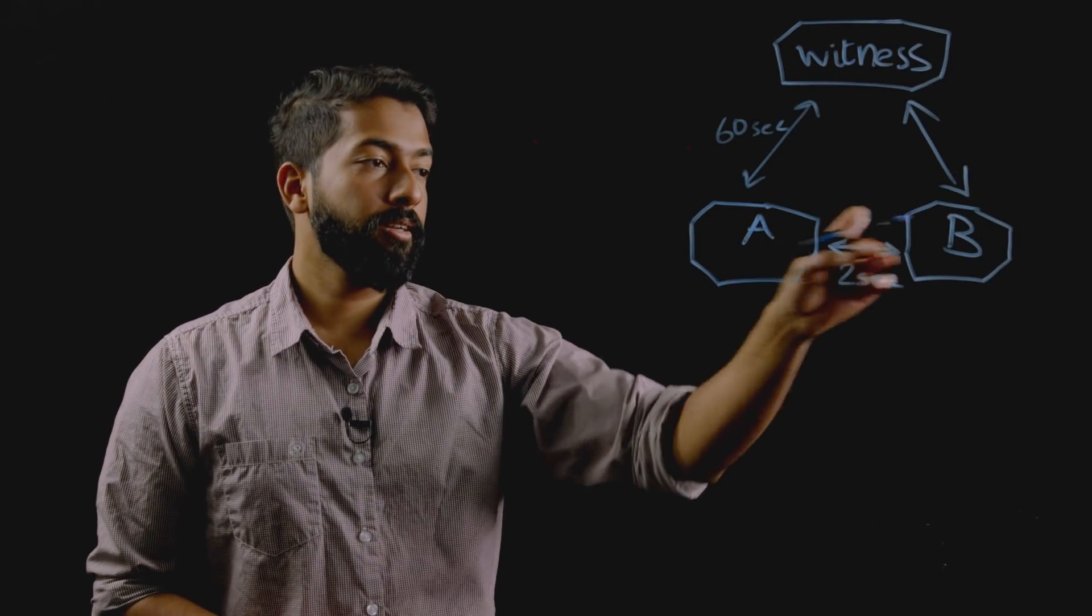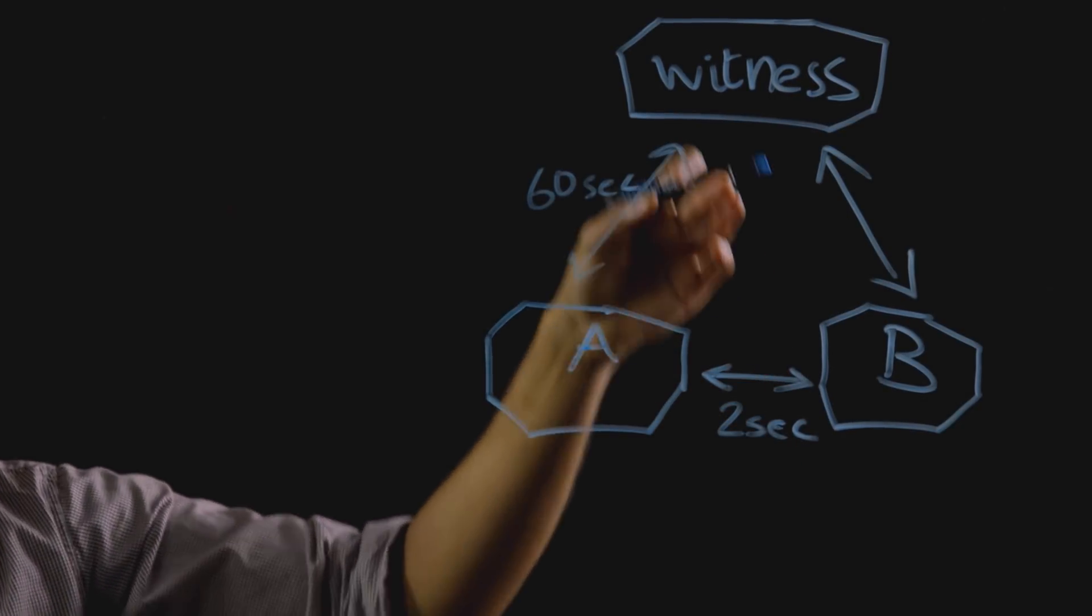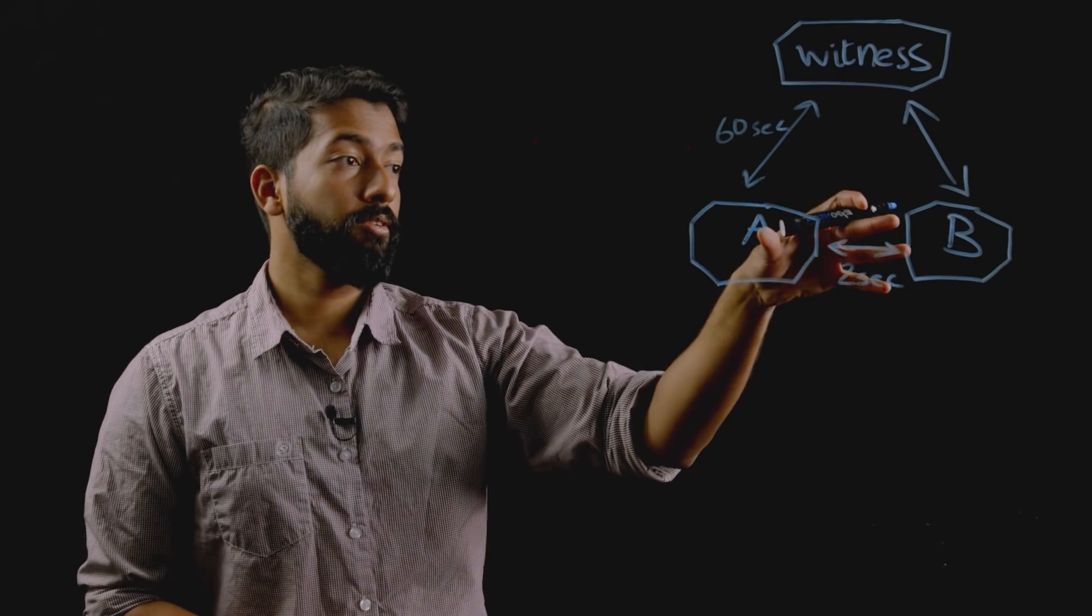Now Genesis on both nodes send heartbeat messages every two seconds and both nodes contact the witness VM at 60 seconds apart. And this is the normal state.